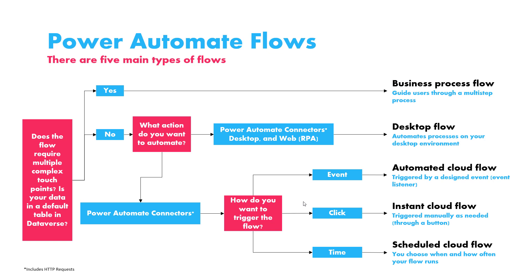So that's how you determine what flow to use based on the task you want to automate. You ask yourself: does the flow require multiple complex touch points or is your data in a default Dataverse table? What action do you want to automate? And how do you want to trigger the flow? The flows listed are also in order of reverse difficulty — Business Process Flows are hardest, followed by Desktop Flows, followed by the three cloud flows, which are all at a similar level and much easier since they run on the cloud, which is what Power Automate is optimized for.